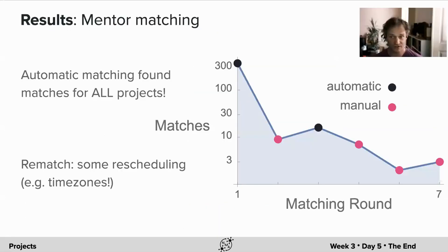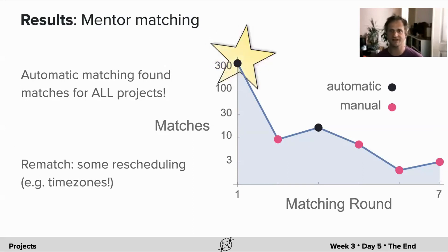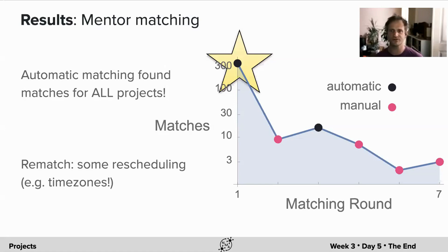Our results in this case are plotted here. Note that the y-axis is a log scale. The first round of successful matching was done automatically, and we matched almost all of the mentors — but not quite all — to projects. Then we had to fix up a few matches manually because of data issues. In the end, we did seven rounds of matching.